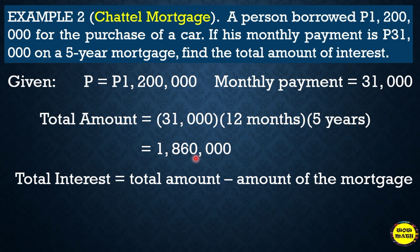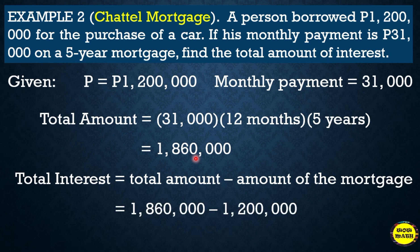The person borrowed one million two hundred thousand pesos and paid a total of one million eight hundred sixty thousand. To find the total interest, we subtract: one million eight hundred sixty thousand minus one million two hundred thousand. The total interest is six hundred sixty thousand. So over five years, the total amount of interest is six hundred sixty thousand pesos.